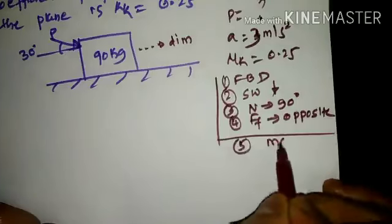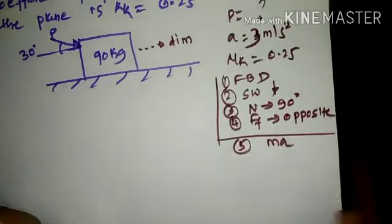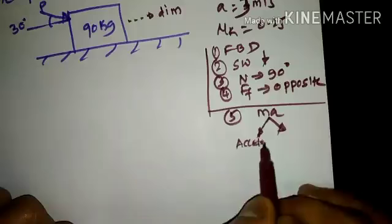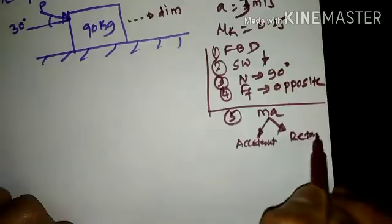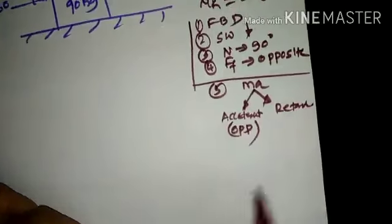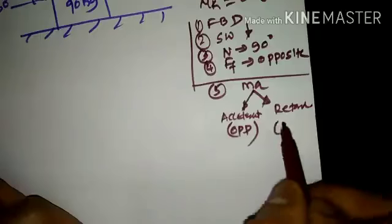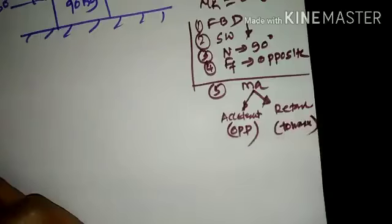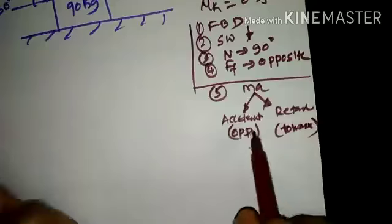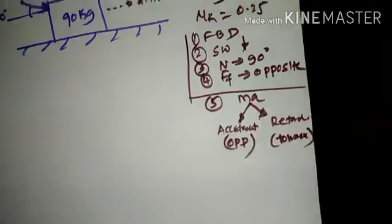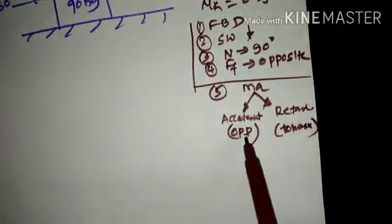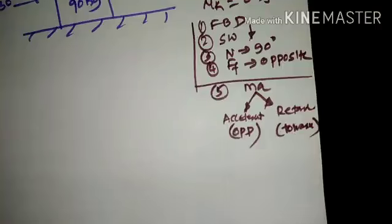Next is the direction of the inertia force, which is Ma. The direction of Ma depends on whether it is a case of acceleration or retardation. If it is acceleration, the inertia force will always be opposite to the movement of the body. When it is retardation, the inertia force will be towards the direction of movement. Retardation means the body comes to a halt.